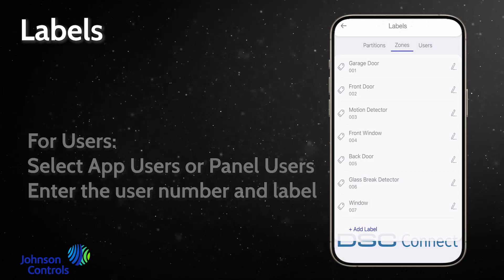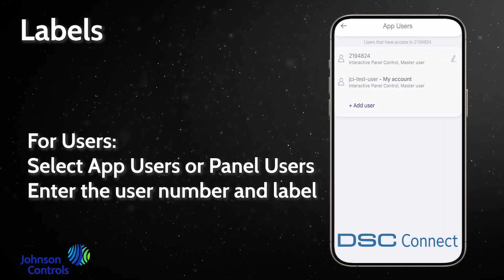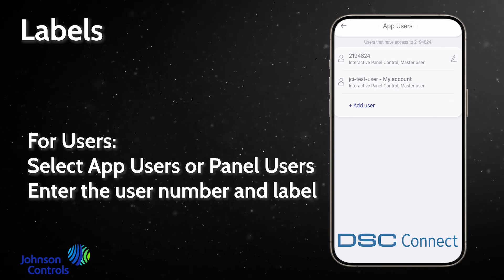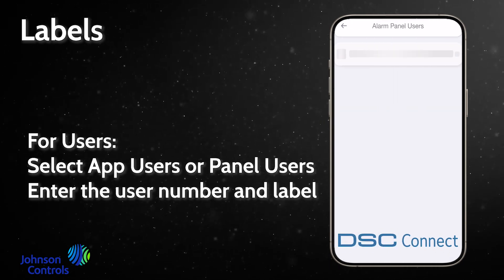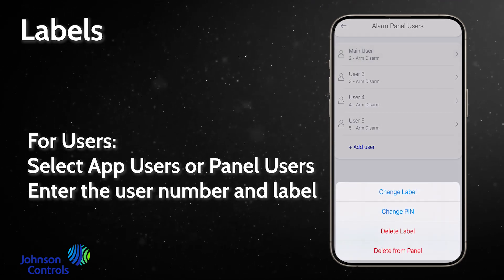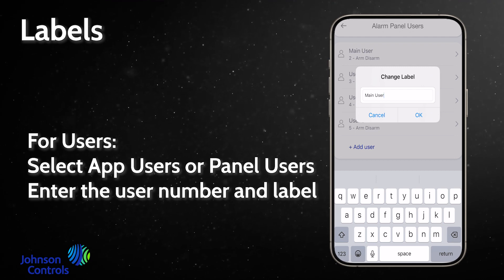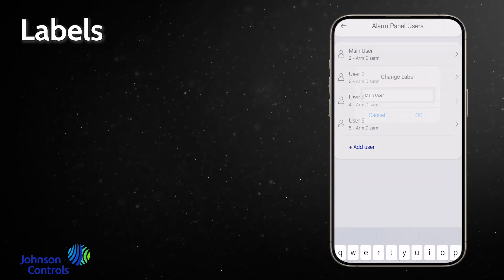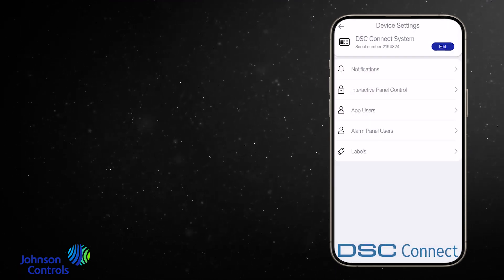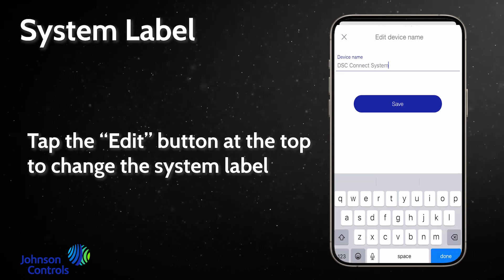For users, select app users or panel users. Enter the user number and label. Tap the edit button at the top to change the system label.